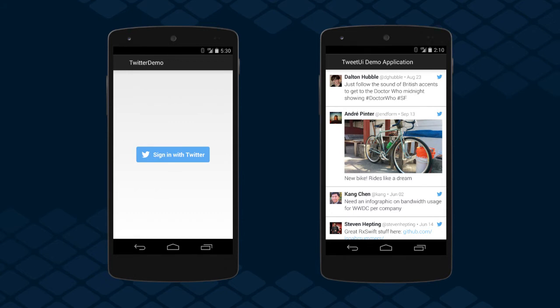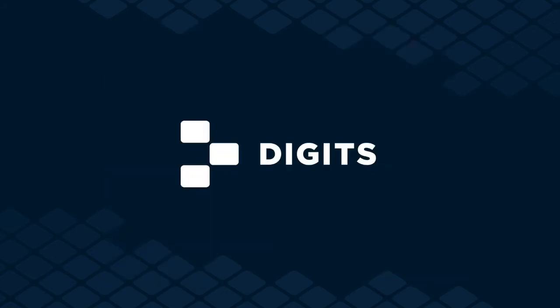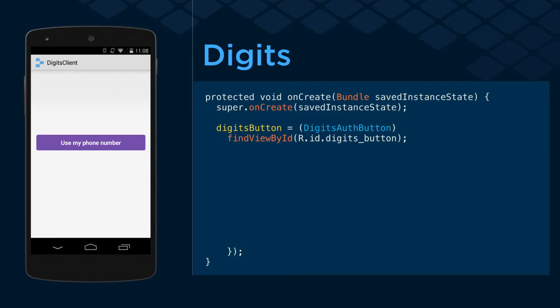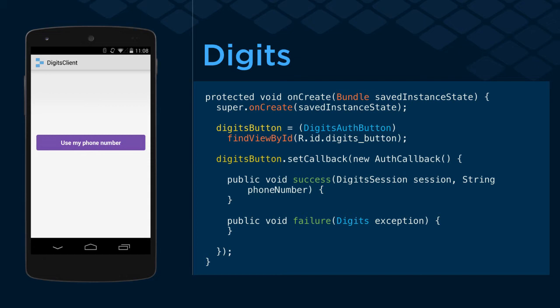The new cool thing we announced in October was Digits. Digits is easy phone number sign-in. Instead of authenticating with email and password, you can ask people to enter their phone number, they'll receive a confirmation code, and you will get an auth token back that will act as your verified user authentication. It's super easy to use — as easy as putting in a Digits button, and it doesn't have to be purple; you can style it however you want. You just set up the button inside your activity, give it a callback, and the auth callback will return with a session and the verified phone number.